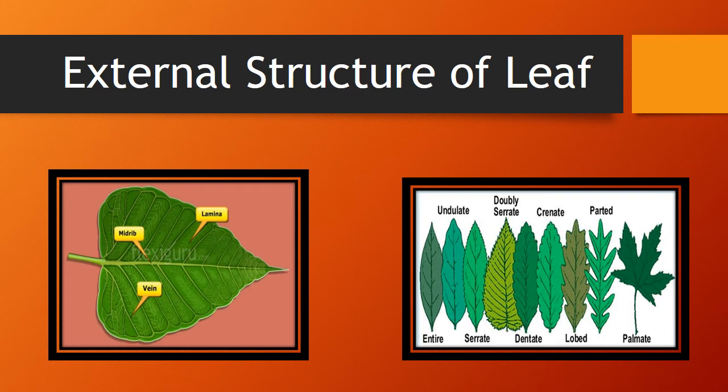External structure of leaf. I will explain the external structure of the leaf. When we look at the leaf externally, it has three main parts. This middle stem is known as the midrib. The green flat surface is known as the lamina, and these thin layers are known as veins.